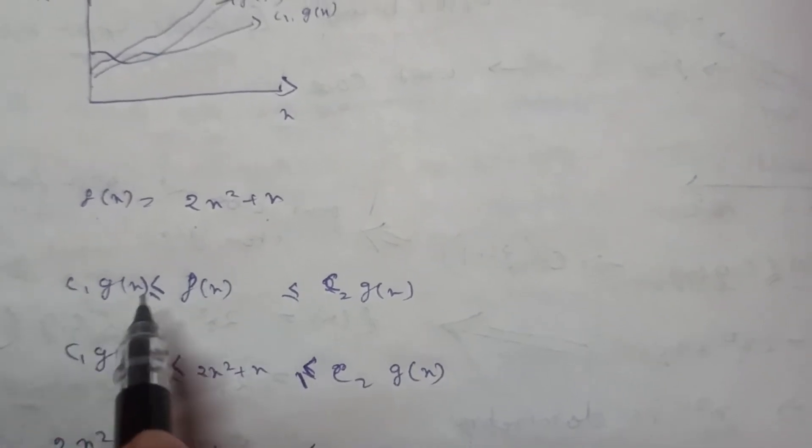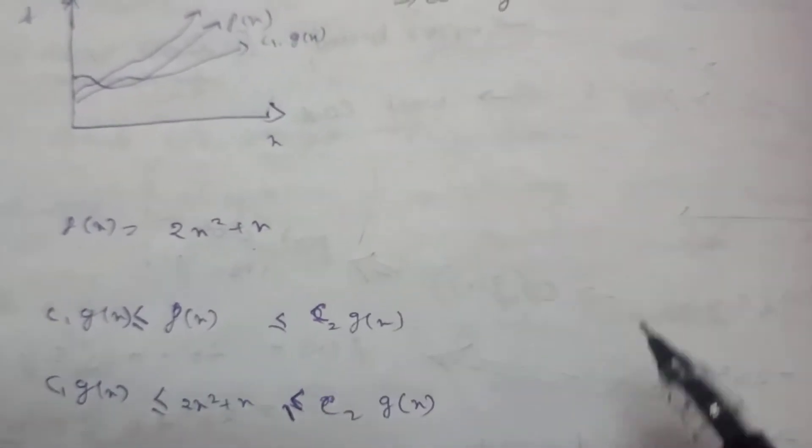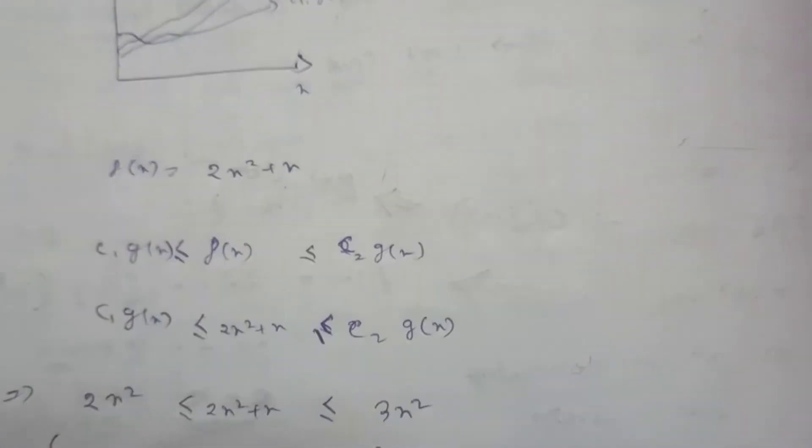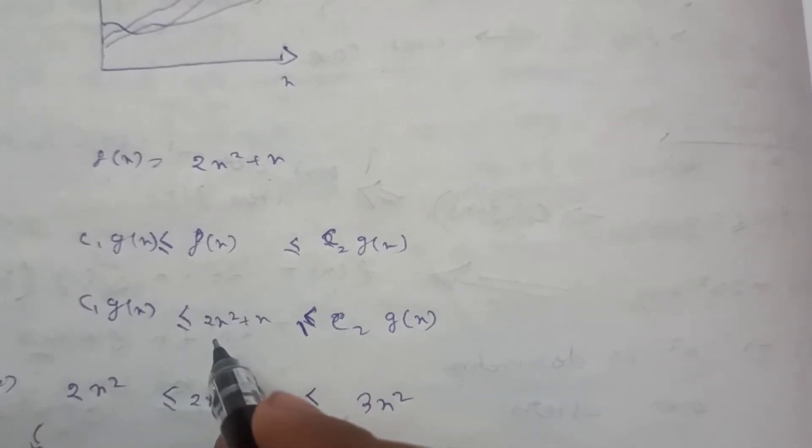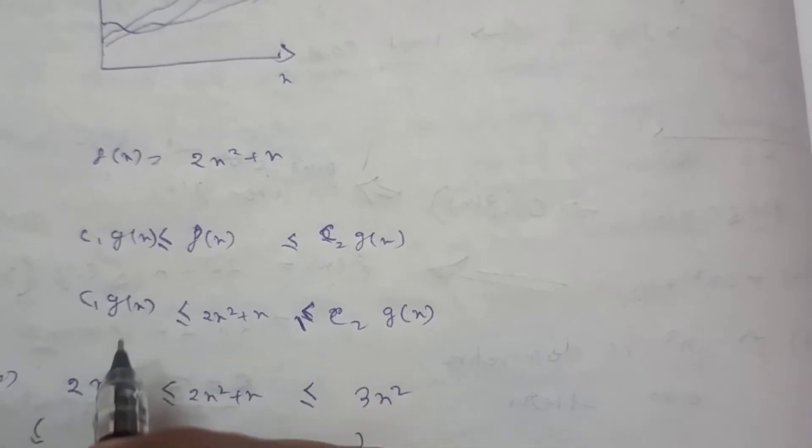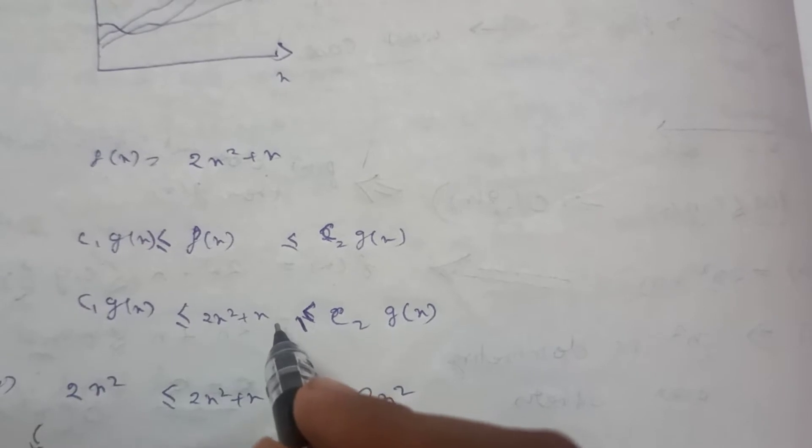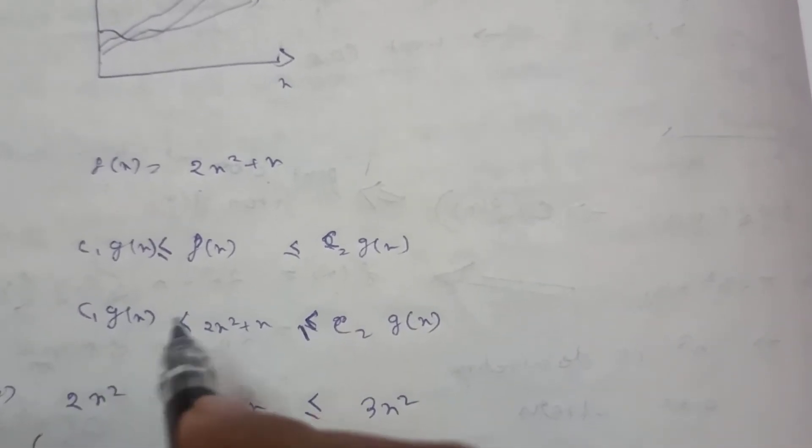So c1 into g of n is less than or equal to f of n, and c2 times g of n is greater than or equal to f of n. So f of n is 2n squared plus n. Our most dominant term is n squared, so g of n will always be n squared. Therefore, c1 n squared less than or equal to 2n squared plus n less than or equal to c2 n squared. Now what should be the value of c1 and c2?